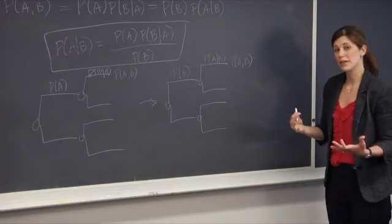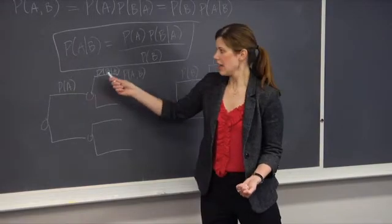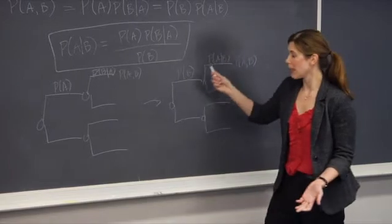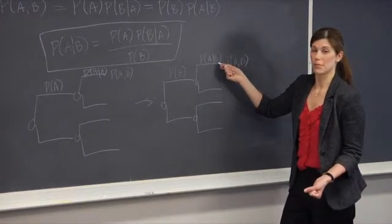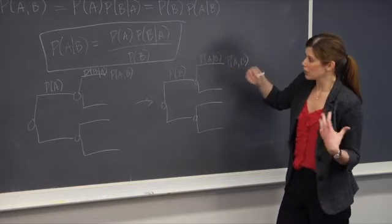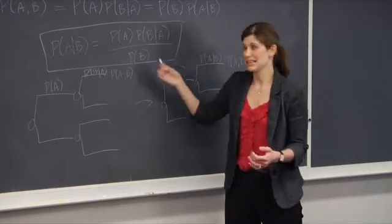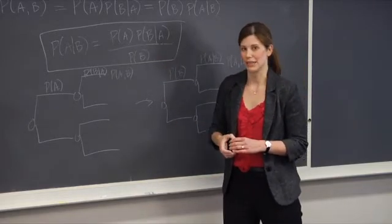So in the example that I just went through, we can think of probability of A as the probability of a disease and B as the probability of a positive test result. And what we're actually interested in is the probability of the disease given a positive test result. So conceptually, doing a tree flipping exercise is exactly the same as doing Bayes' rule using the more standard notation that you see here.